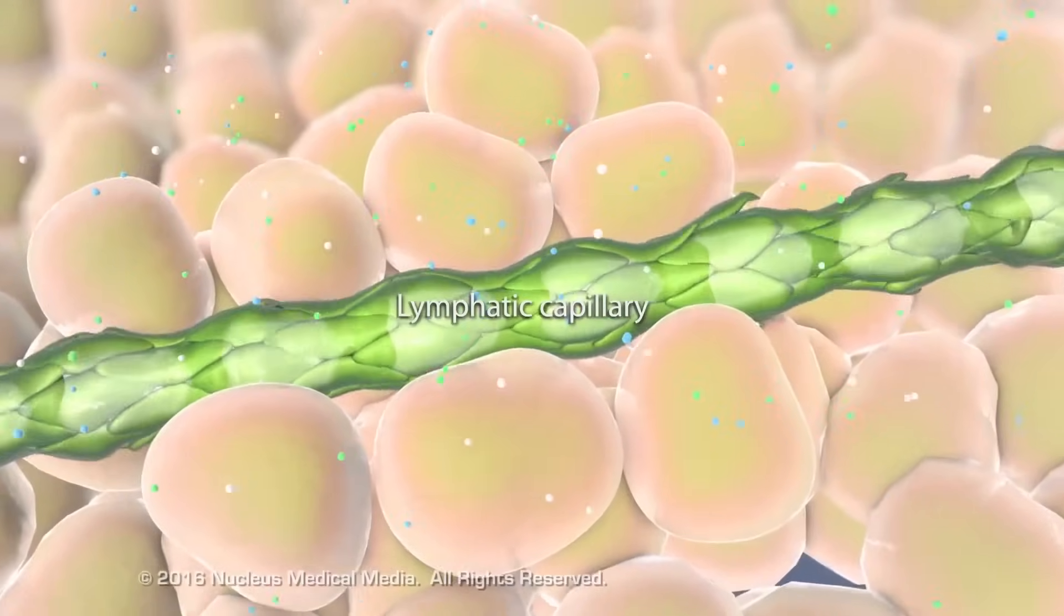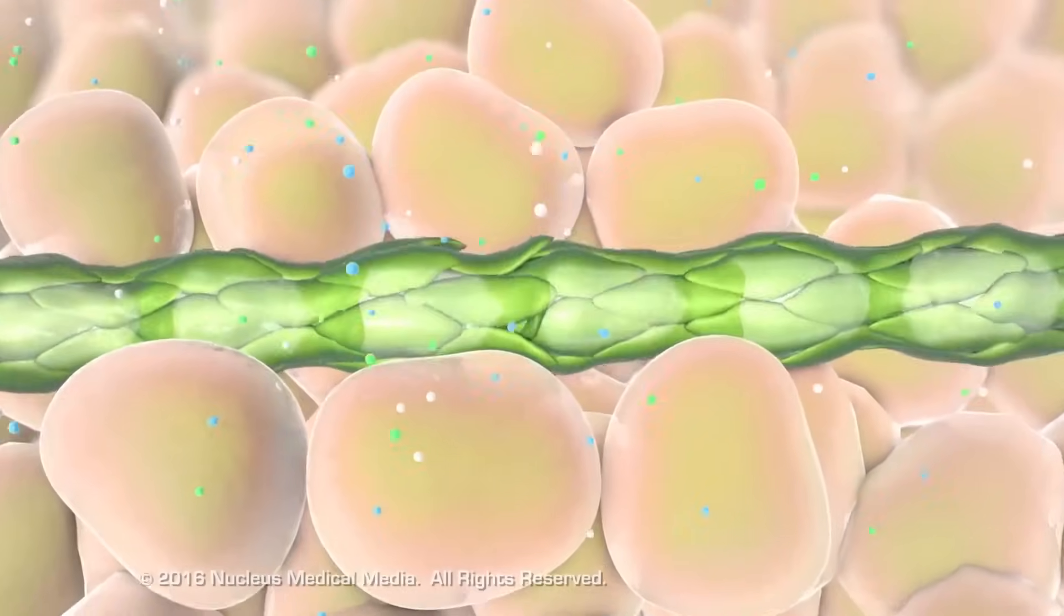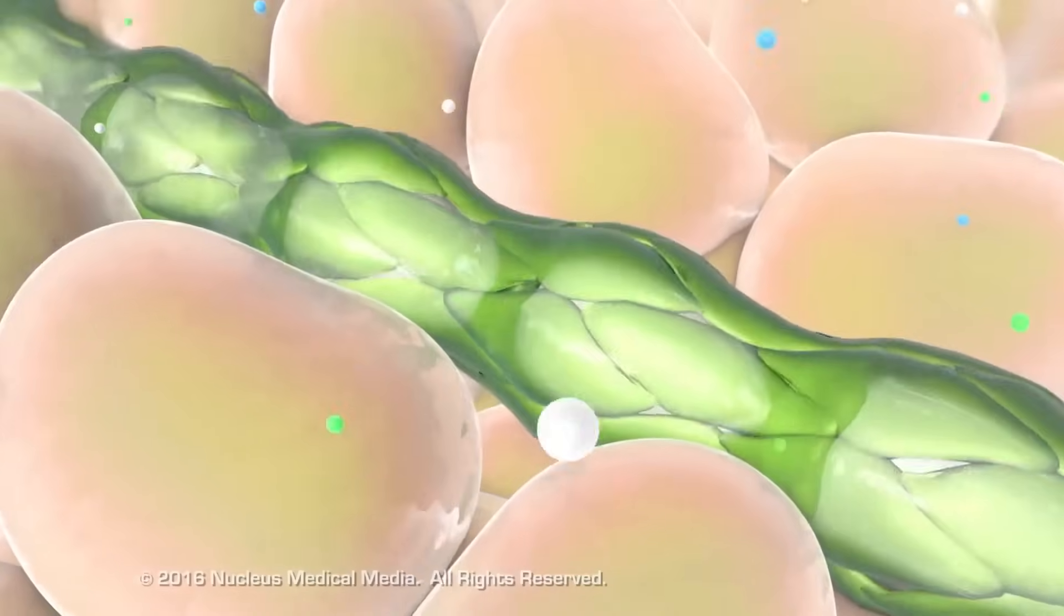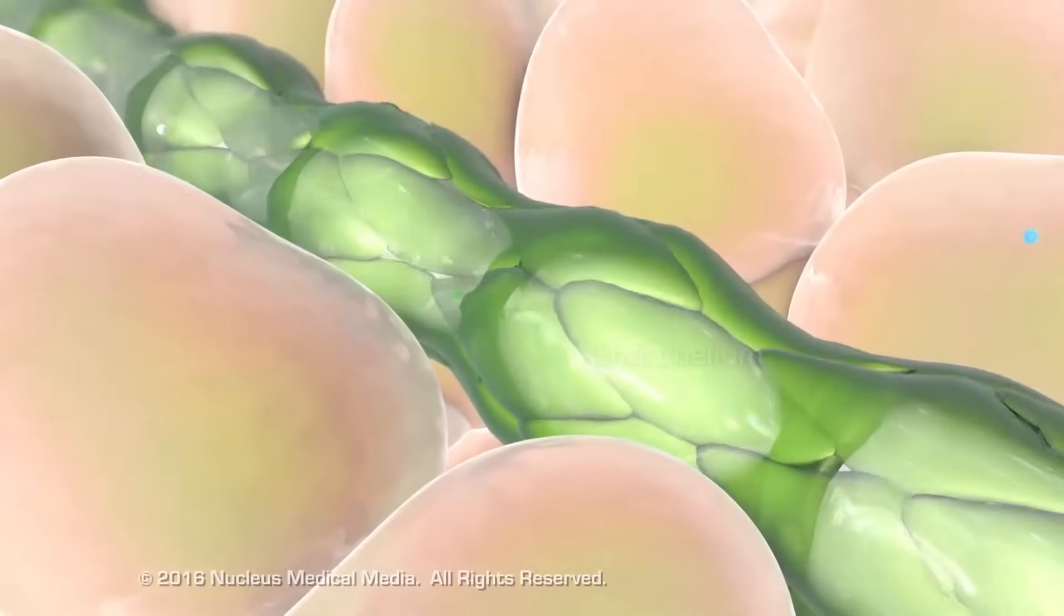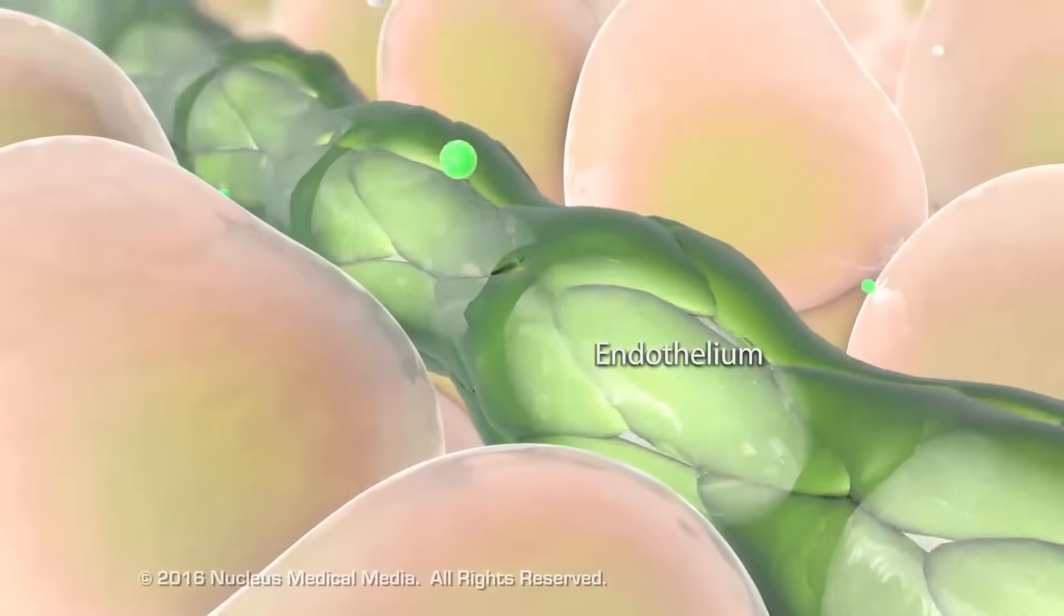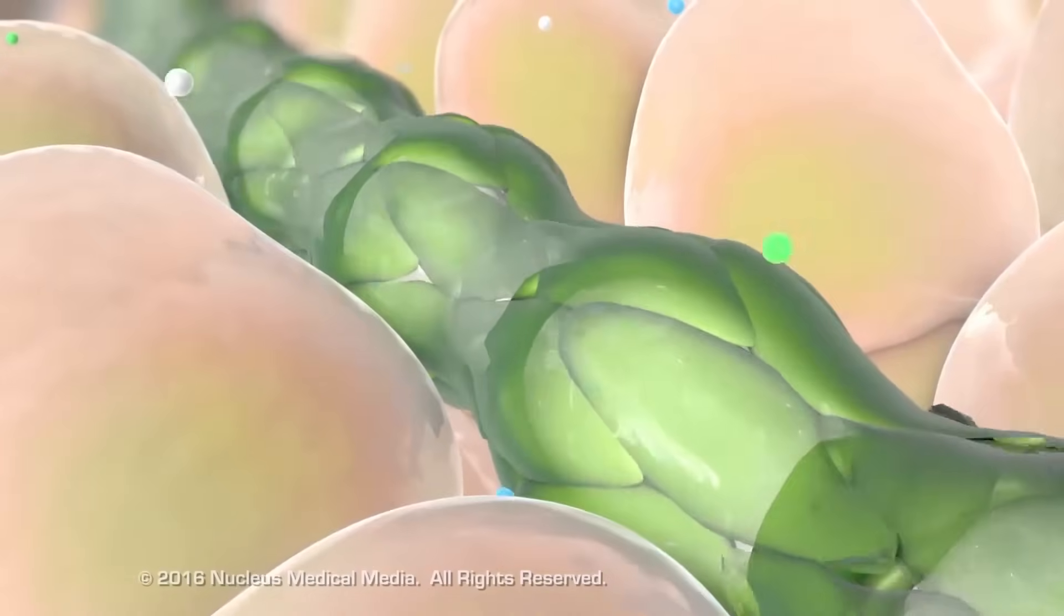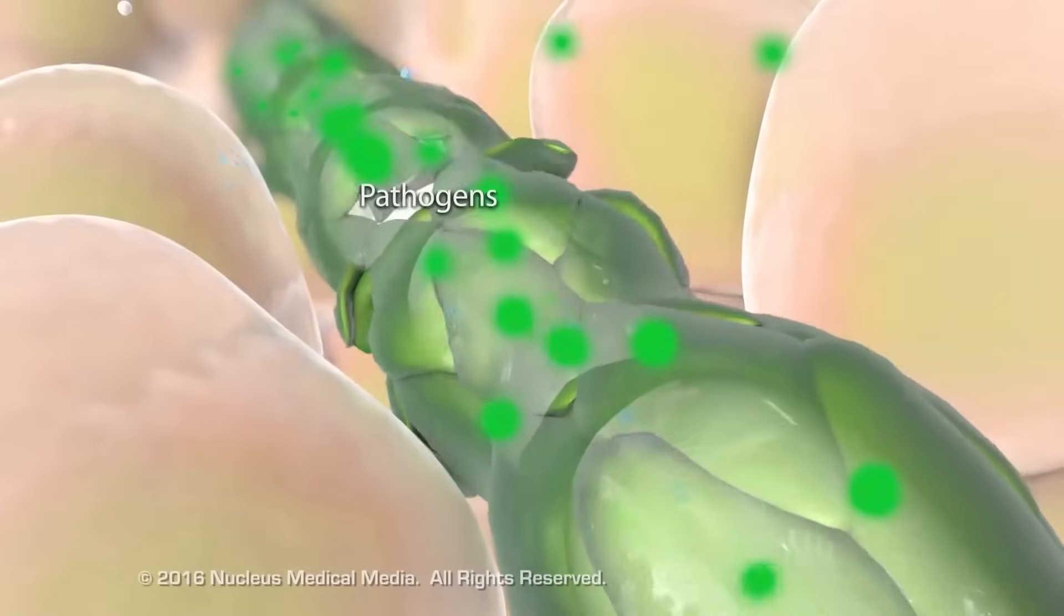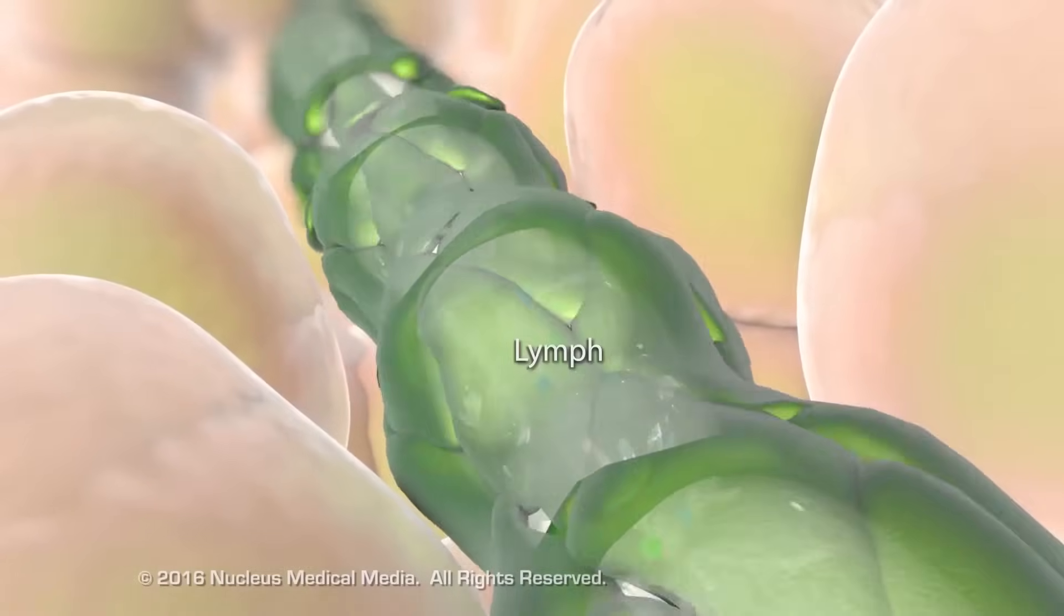Lymphatic capillaries drain the excess extracellular materials to help maintain fluid balance and immunity. Loose endothelial junctions in the lymphatic capillaries allow macromolecules and pathogens to enter, joining lymph circulation.